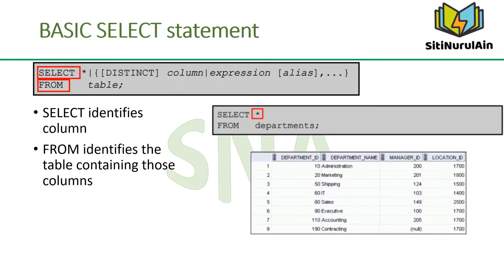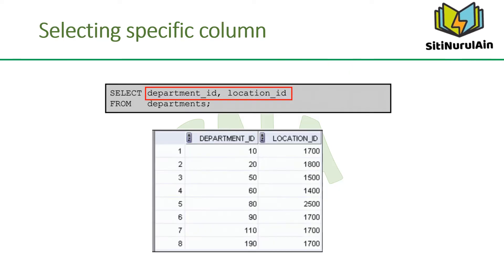In its simplest form, a SELECT statement must include a SELECT clause, which specifies the columns to be displayed, and a FROM clause, which identifies the table containing the columns listed in the SELECT clause. You can display all columns of data in a table by following the SELECT keyword with an asterisk. The Departments table contains four columns: Department_ID, Department_Name, Manager_ID, and Location_ID, with eight rows — one for each department. You can use the SELECT statement to display specific columns by specifying the column names separated by commas. The example displays all department numbers and location numbers from the Departments table.